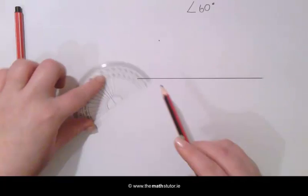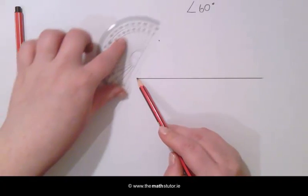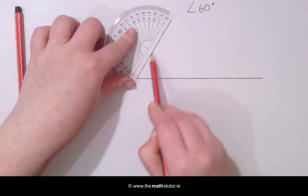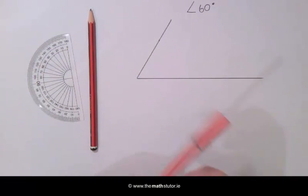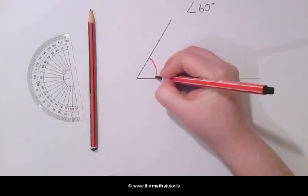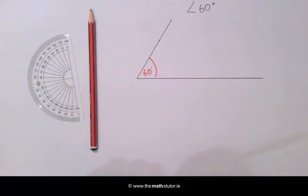We then draw a line from the start of ours to this point. And here we can see we have an angle of 60 degrees.